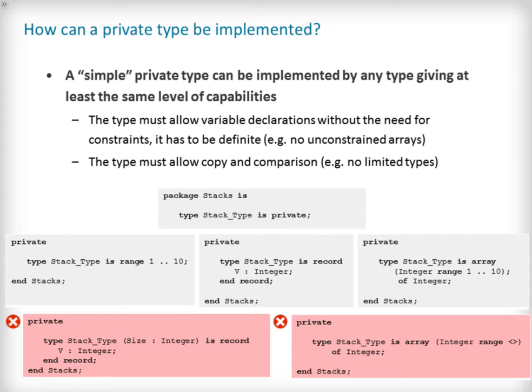Given the simple private type declaration of stack type, we see three legal implementations: using a discrete numerical range, a record and a constrained array. Two illegal implementations are also given for completeness. The example shows a failed attempt to use a discriminated record and an unconstrained array to implement the simple private type.